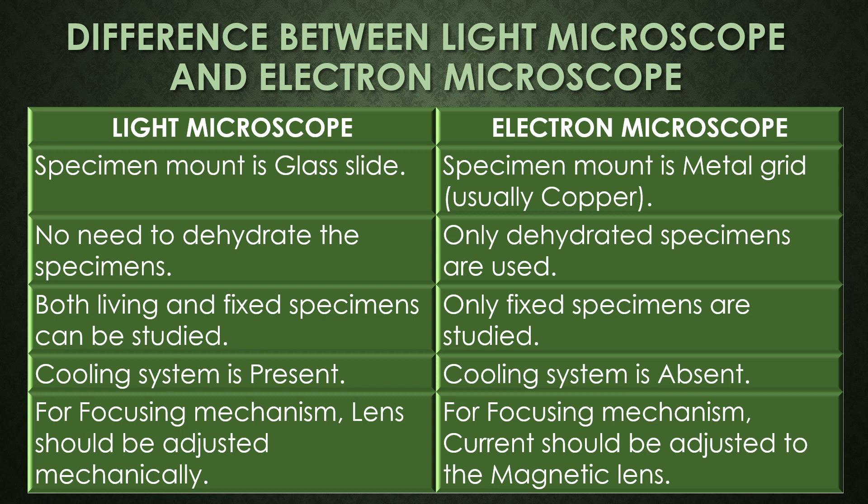In the light microscope there is no need to dehydrate the specimens, but in the electron microscope only dehydrated specimens are used. Under the light microscope both living and fixed specimens can be studied, but in the electron microscope only fixed specimens are studied. A cooling system is present in the light microscope and absent in the electron microscope. For the light microscope, lenses are adjusted mechanically for focusing, whereas for the electron microscope the current is adjusted to the magnetic lens.